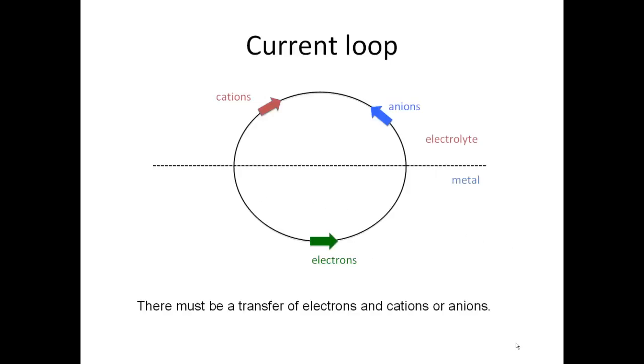So these two reactions are going on, and we have a current loop now. We have electrons moving through the metal, we have anions and cations flowing through the electrolyte. There's a transfer of charge in order to have corrosion.